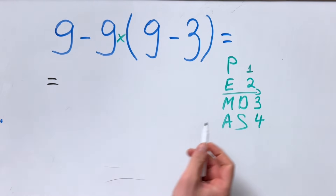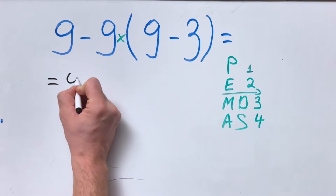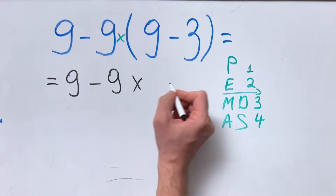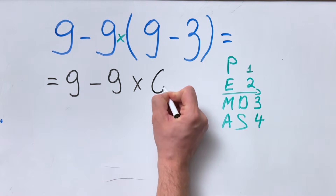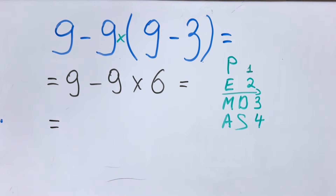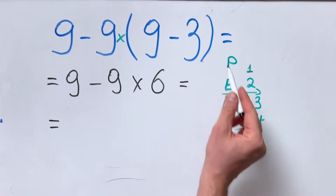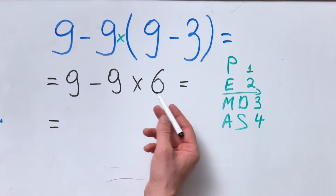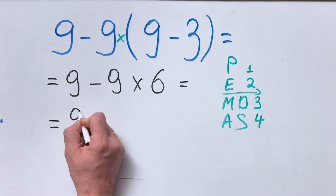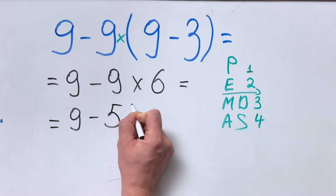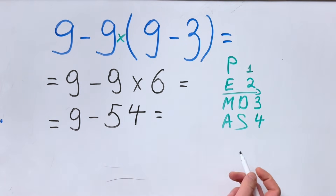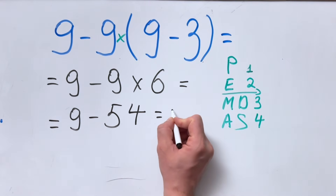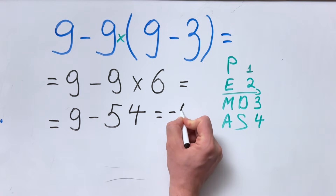Let's go. First, we do what's inside the parentheses: 9 minus 3 equals 6. Now we do the multiplication, since we have no exponents: 9 multiplied by 6 is 54. So we have 9 minus 54. And now the last step is the subtraction: 9 minus 54 equals negative 45.